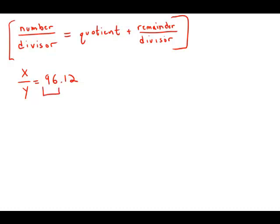The whole number, 96, that's the quotient. And the decimal, 0.12, that's the remainder over the divisor.